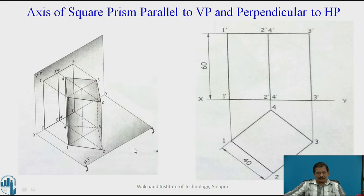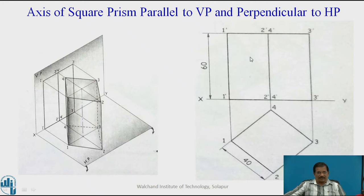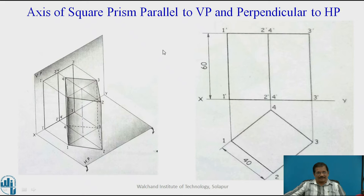Now if you observe, this is called HP and this is called VP. This axis is parallel to VP and perpendicular to HP, so the square prism is placed on HP. When you observe the front view, that will be a rectangle with one more vertical line at the centre — 1-1', 2-2', 4-4' overlapping each other, and 3-3'. When you observe it from the top, it will be a square of the given side, that is 40 mm side, whereas the axis is 60 mm.